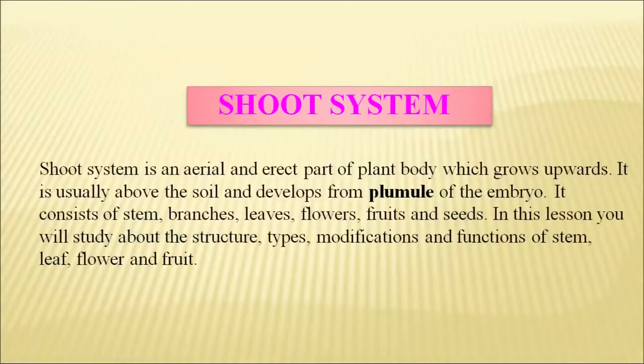The shoot system consists of stem, branches, leaves, flowers, fruits and seeds. Today in this discussion we shall study about the structure, types, modifications and functions of the stem, and also the functions of leaf, flower and fruits.